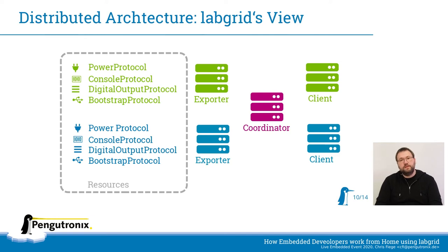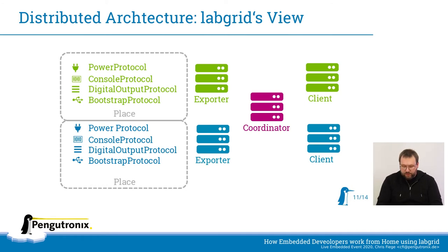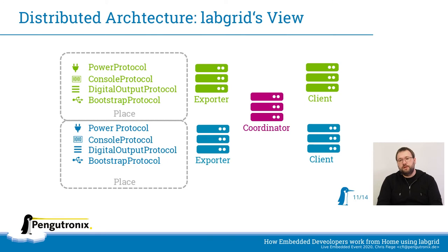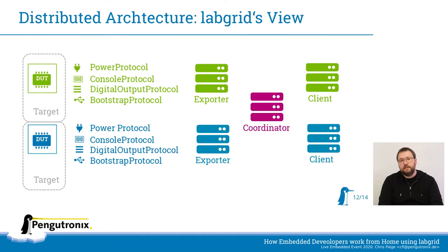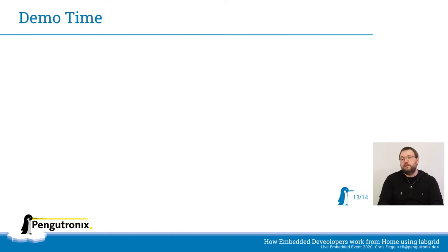Just two more words before we start with the demo part. One thing I will mention during my demo is places. A place in LabGrid is a group of resources that you usually use together for one device under test, but a resource can be part of multiple places. LabGrid has a locking mechanism — if you lock a place, you lock all the resources allocated to that place, so no one else can use them. The other term we'll need is target — a device under test is simply called a target in LabGrid. And that concludes my theoretical part; now let's switch over to the demo.